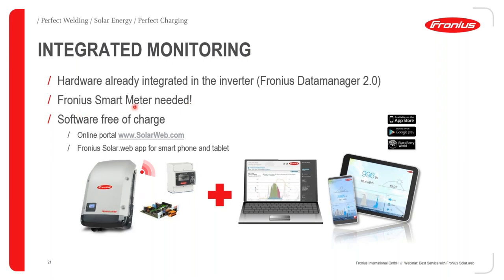For consumption data monitoring, a Fronius Smart Meter is required. The smart meter also allows grid export limitation — important in countries where PV power export to the grid is restricted. Monitoring is done through Fronius SolarWeb, which is available for all smart devices including laptops, tablets, watches, and phones. The applicable app can be downloaded from the App Store, Google Play, or BlackBerry World.